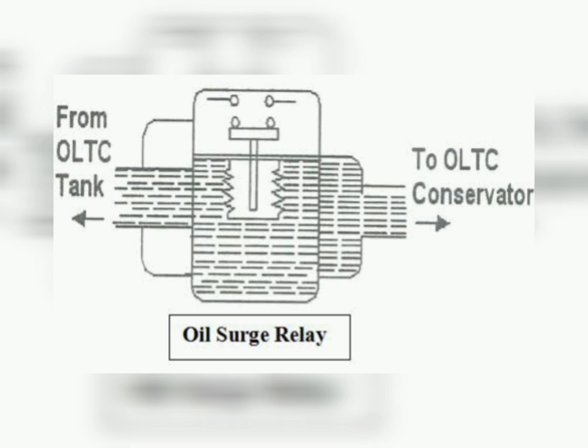The oil surge relay operates by using a float and a set of contacts. The float is connected to a lever that moves when the oil level changes. The contacts are connected to the circuit breaker and are normally closed. When the oil level changes, the float moves and the lever opens the contacts, tripping the circuit breaker and interrupting the flow of electricity. The relay is typically set to trip when the oil level changes by more than a certain amount, typically a few centimeters, and the exact trip point can be adjusted to suit the specific requirements of the transformer.